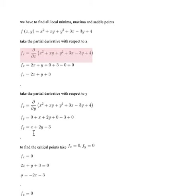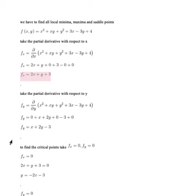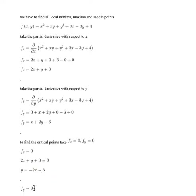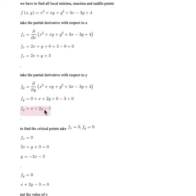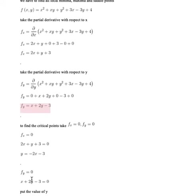To find all critical points, we set fx = 0 and fy = 0. Setting fx = 0: 2x + y + 3 = 0, so 2x + y = -3, giving y = -2x - 3. Now setting fy = 0: x + 2y - 3 = 0, so x + 2y - 3 = 0. We substitute the value of y into this equation.